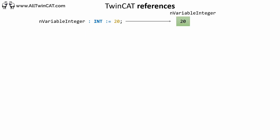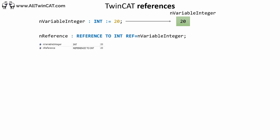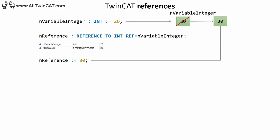Let's now look at references. While a pointer is just a variable with an address, a reference is the object just with another name — think of it as an alias. You declare a reference pretty much the same way as a pointer, but you use the keywords REFERENCE TO instead. When assigning a value to a reference, you use the operator REF=. In this example we have a reference to an integer assigned the value of nVariableInteger. When assigning a new value to the reference, you don't need to use any dereferencing — just use it like a normal variable.